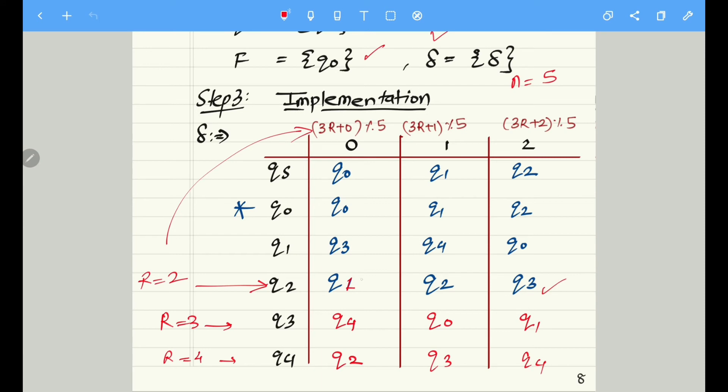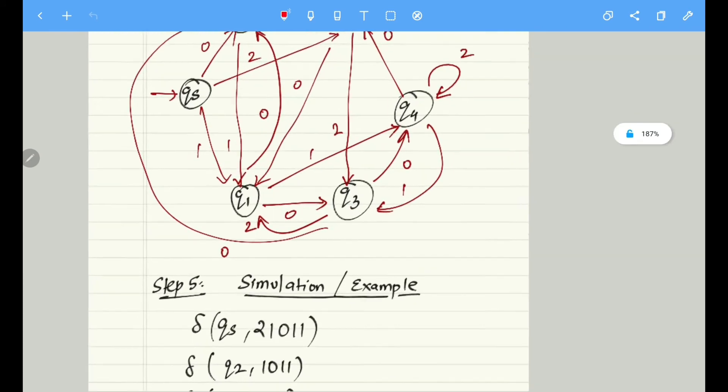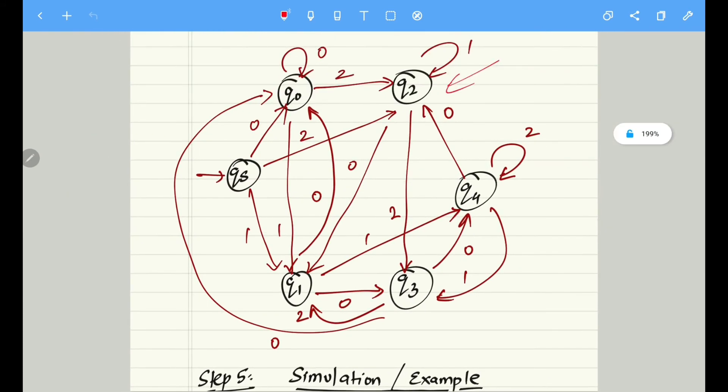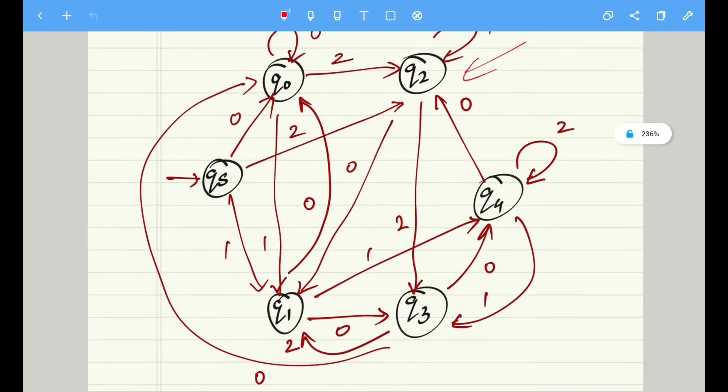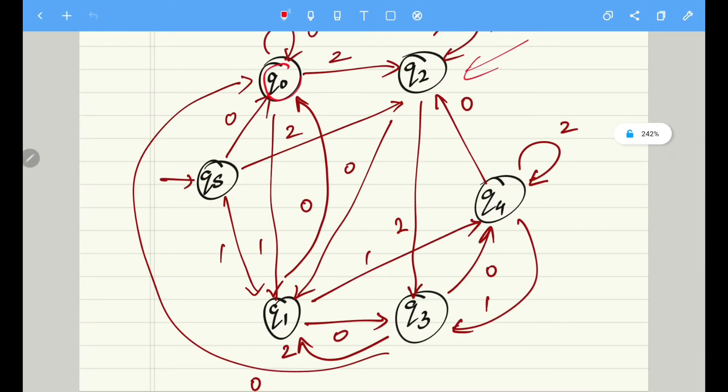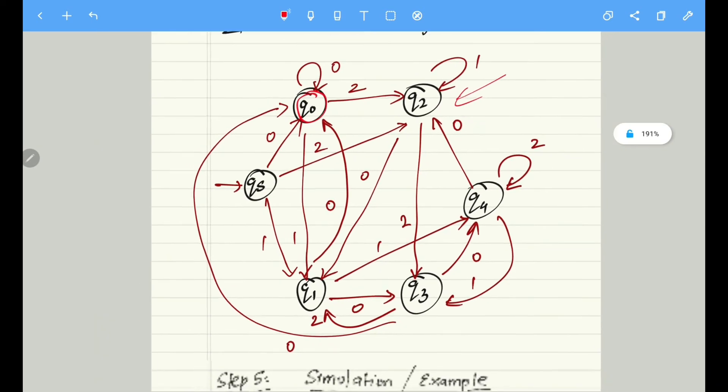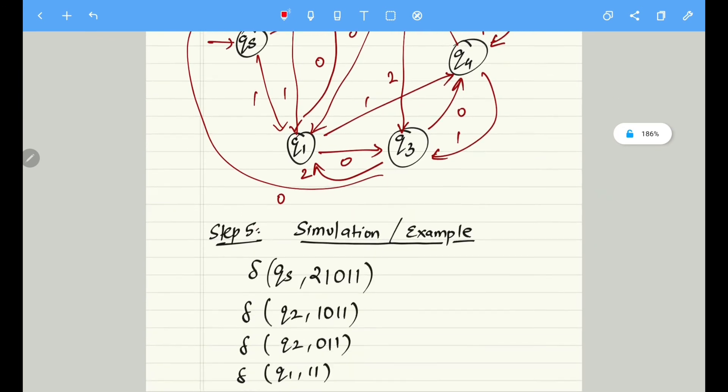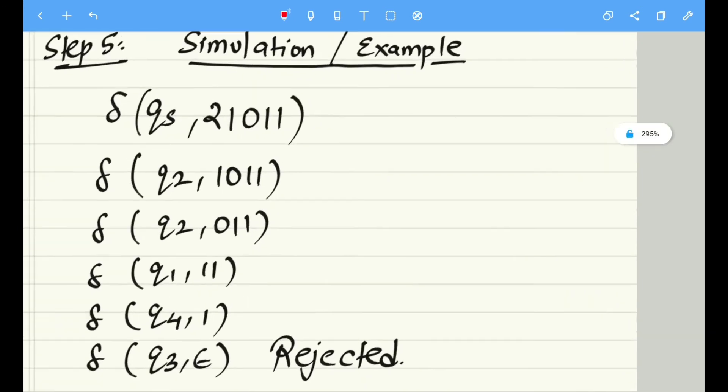With the same logic we have to construct the entire diagram, and don't forget to put a double circle here in Q0 which represents a final state. That's it. So let's move on to step number five.